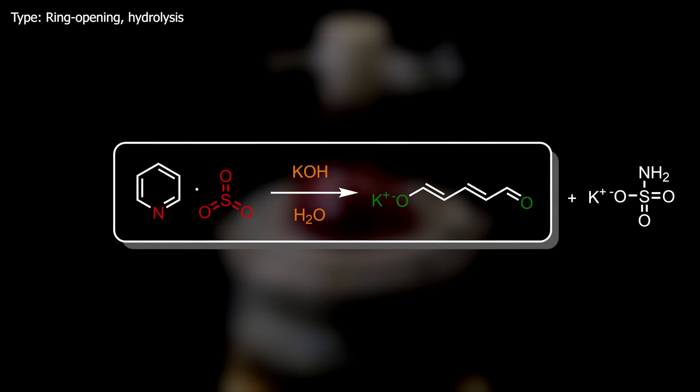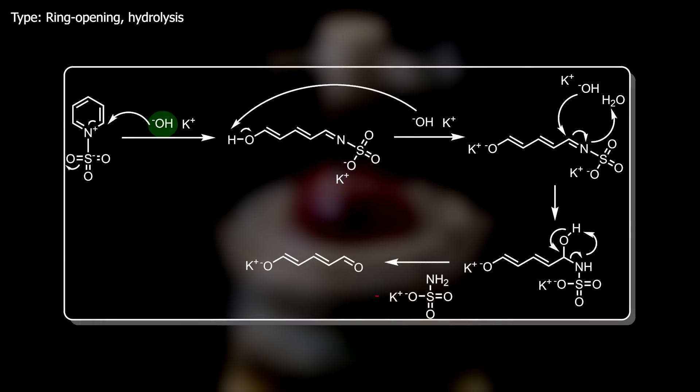In this reaction, potassium hydroxide and water react with the pyridine SO3 complex, causing it to ring open and hydrolyze, forming this enolate aldehyde molecule and potassium sulfamate. How it works is that the hydroxide ion attacks the pyridine in the 2-position, causing the nitrogen-carbon bond electrons to move onto the nitrogen, to balance the charge that it had from bonding with the sulfur trioxide. Now it won't kick off sulfur trioxide, since that would disbalance its charge again. Instead, now that nitrogen is neutral, the sulfur also has to be neutral.